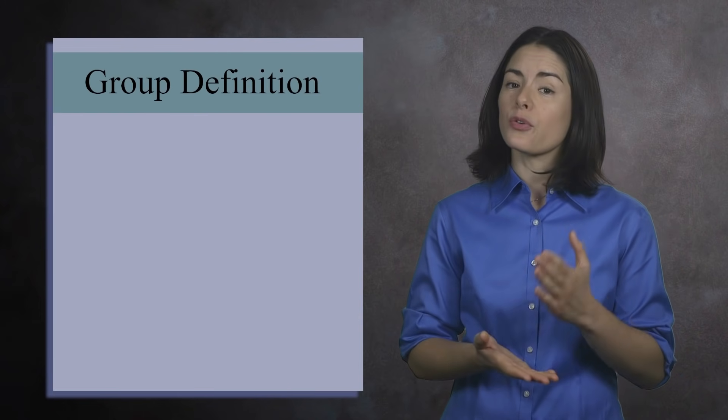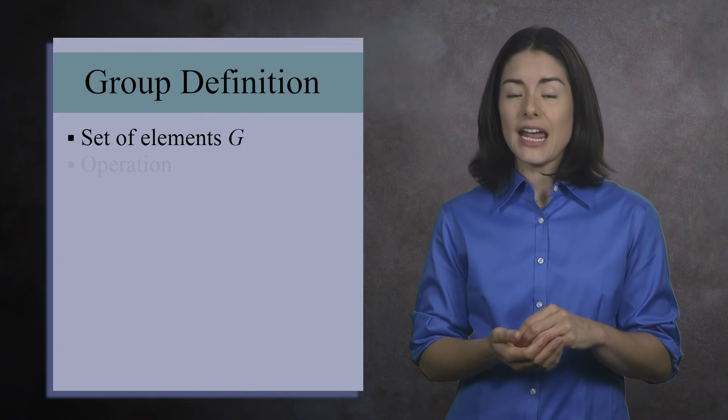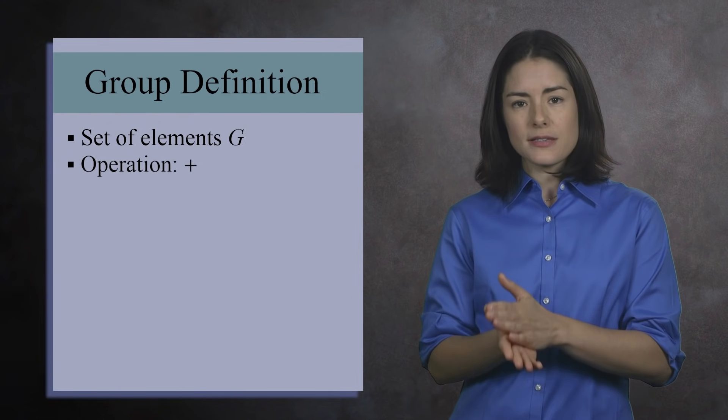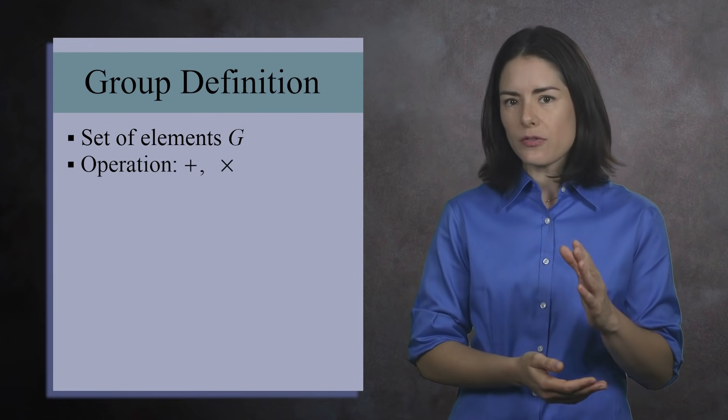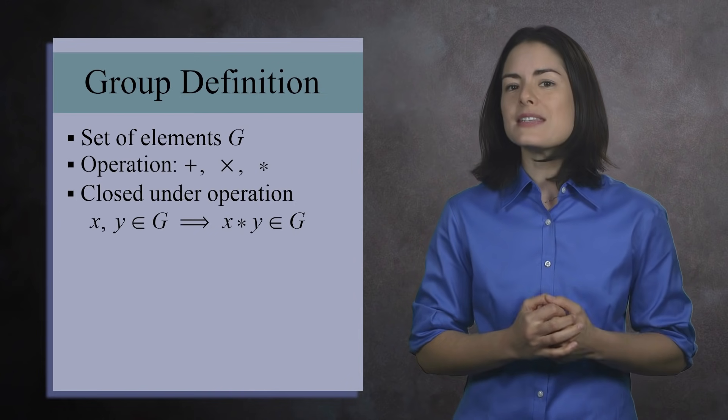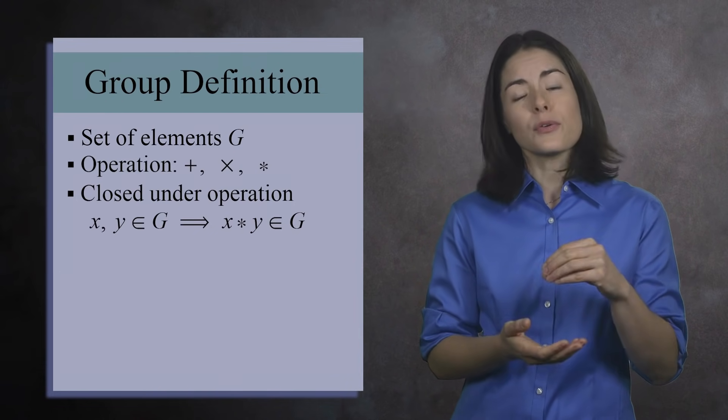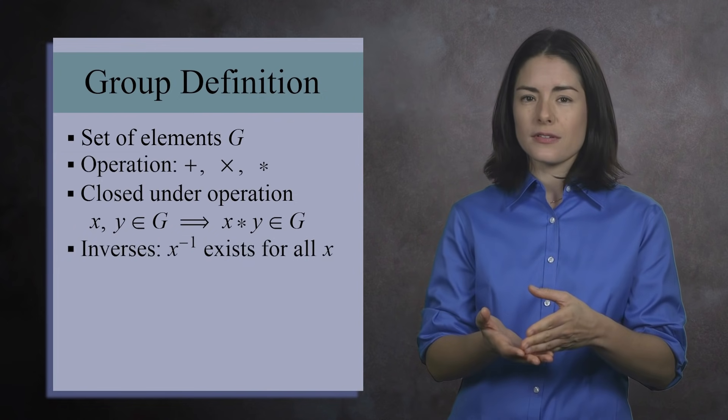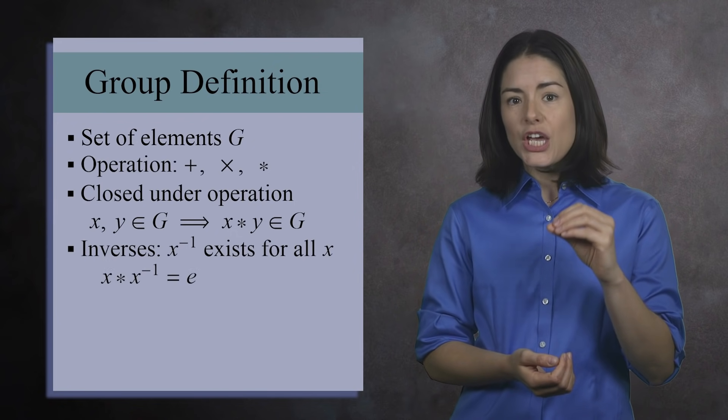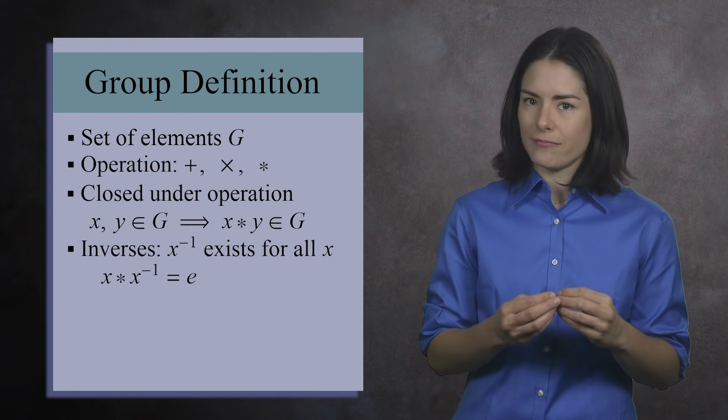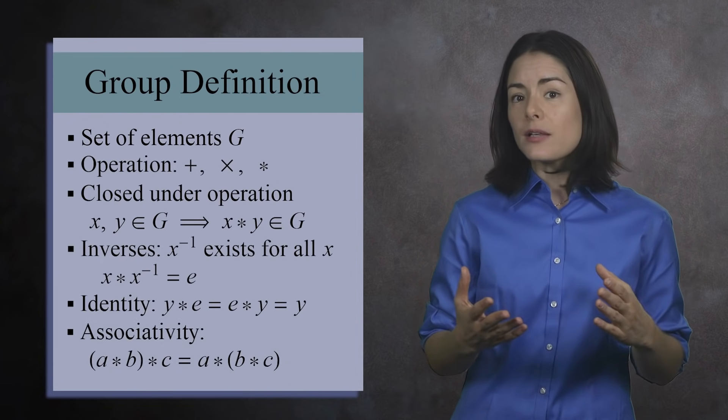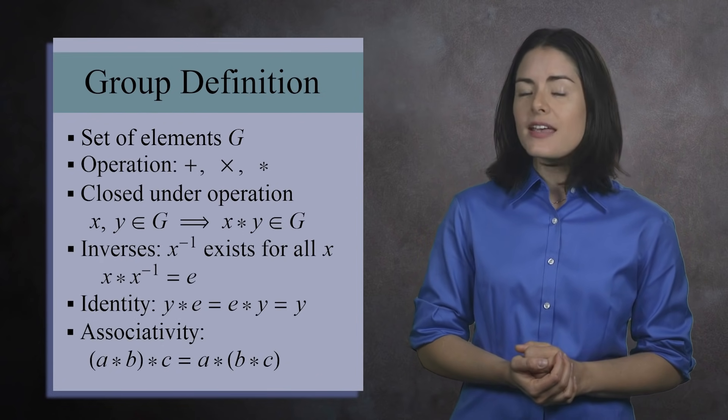Let's now give the general definition of a group. A group is a set of elements G. It has an operation which allows you to combine any 2 elements. Common symbols for the operation are the plus sign or multiplication sign, but when speaking generally, we'll use an asterisk. Next, the group is closed under this operation. This means if you combine any 2 elements in the group, you get another element in the group. Each element x has an inverse. This is an object that has the opposite effect of x. And when you combine x and its inverse, you get the identity element, which we'll call e. If you combine any element y with the identity element e, you get y. And finally, the elements obey the associative property. This is the definition of a group.